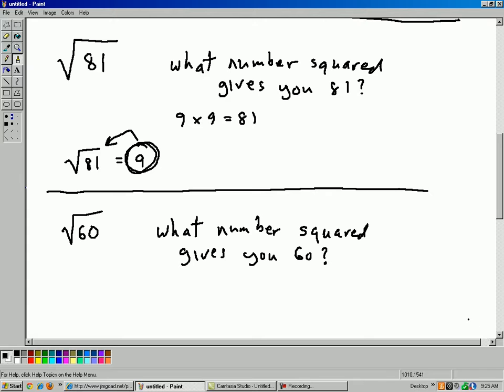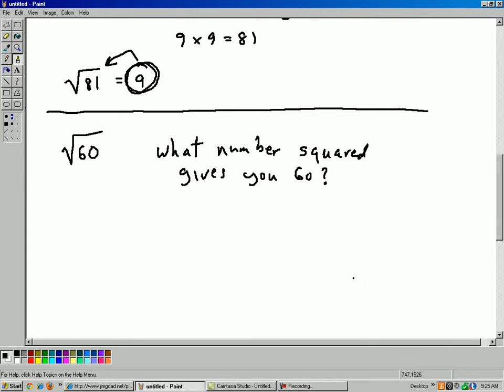Well, you can go through the same procedure. You can do some trial and error here. We know that, say, 7 times 7 gives me 49. So 7 is not the answer. That's too low. 8 times 8 gives me 64. So that's too high. So 8 is too high. 7 is too low. So what is the number that would give me exactly 60? Well, it has to be 7 point something.